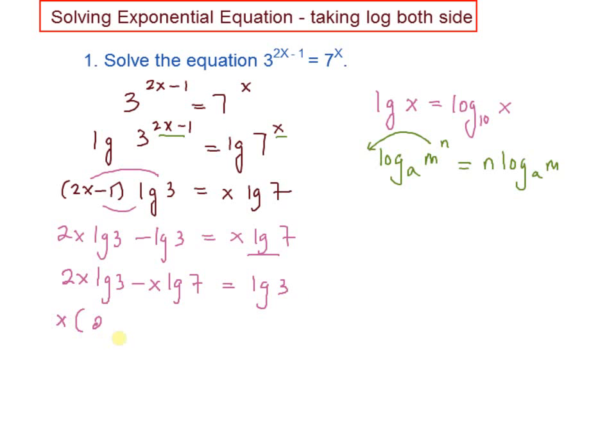After that, factorize your x. You have 2 log 3 minus log 7 equal to log 3.